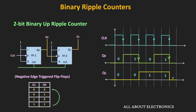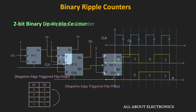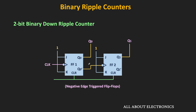Similarly, with a little modification we can use the same circuit for down counting. For the down counter, instead of the Q output, the Q' output of the first flip-flop is connected to the clock input of the next flip-flop. With this little modification, the circuit will work as a 2-bit down counter.